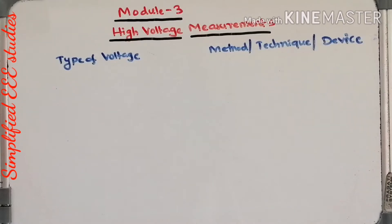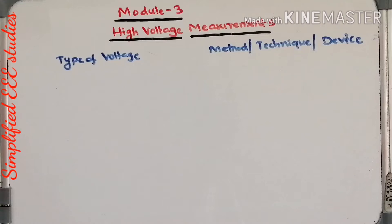Now let us consider voltage types. We will have different types of voltages such as DC voltage, AC voltage with power frequency, AC high frequency voltage, impulse voltage, and other fast-changing voltages. Let us list the different techniques and devices available for voltage measurement.